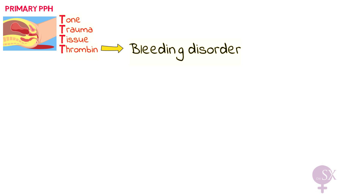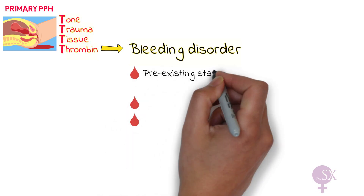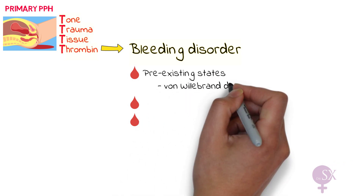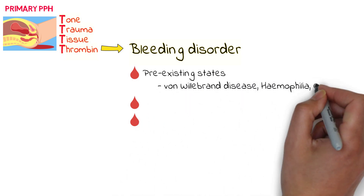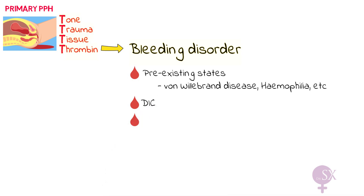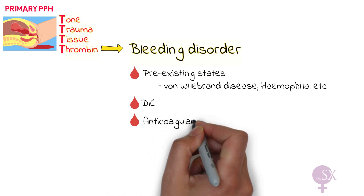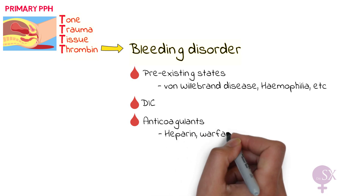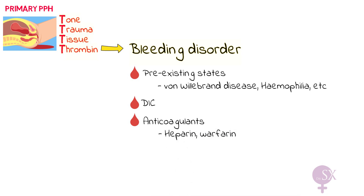The fourth T is thrombin, referring to bleeding disorders and problems with coagulation. This can be a pre-existing state such as von Willebrand disease or hemophilia, or it can be due to disseminated intravascular coagulation (DIC), or secondary to anticoagulants the mother may be taking such as heparin or warfarin.